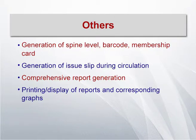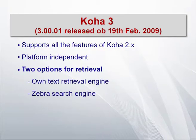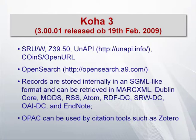Koha can generate spine labels, barcodes, membership cards, and issue slips during circulation. Comprehensive report generation is available, it can be linked with AWstats to create real-time usage statistics, and reports can be printed and displayed in different formats — directly in CSV convertible to Excel or OpenOffice format. The versioning journey from Koha 3 started in 2009; the current version is 16.05.00. Koha presently supports standards like SRU, SRW, and OpenSearch. The latest version also supports OpenID — meaning if you have a Google ID you can log in.